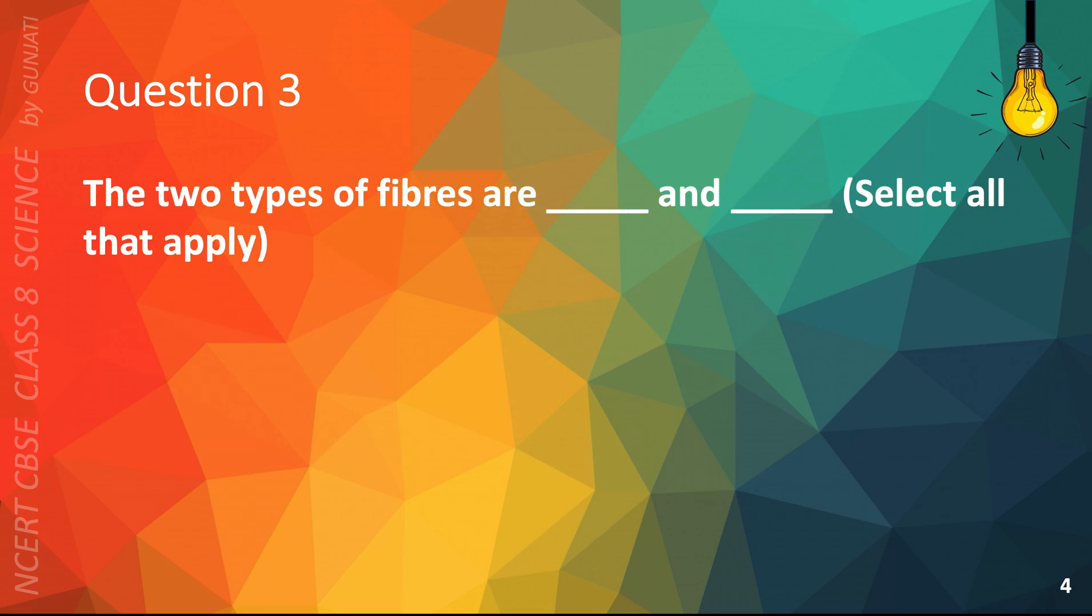Question 3. The two types of fibers are blank and blank. Select all that apply. A. Gas, B. Natural, C. Liquid, or D. Artificial. The correct answer is B. Natural, and D. Artificial.